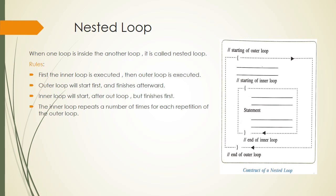This is the next part of the chapter: nested loops. When one loop is inside another loop, it is called a nested loop. The structure is: start of outer loop, then start of inner loop, statements are written in between, then end of inner loop, and finally end of outer loop. The rule of nested loops: the outer loop starts first and finishes last; the inner loop starts after the outer loop but finishes first.